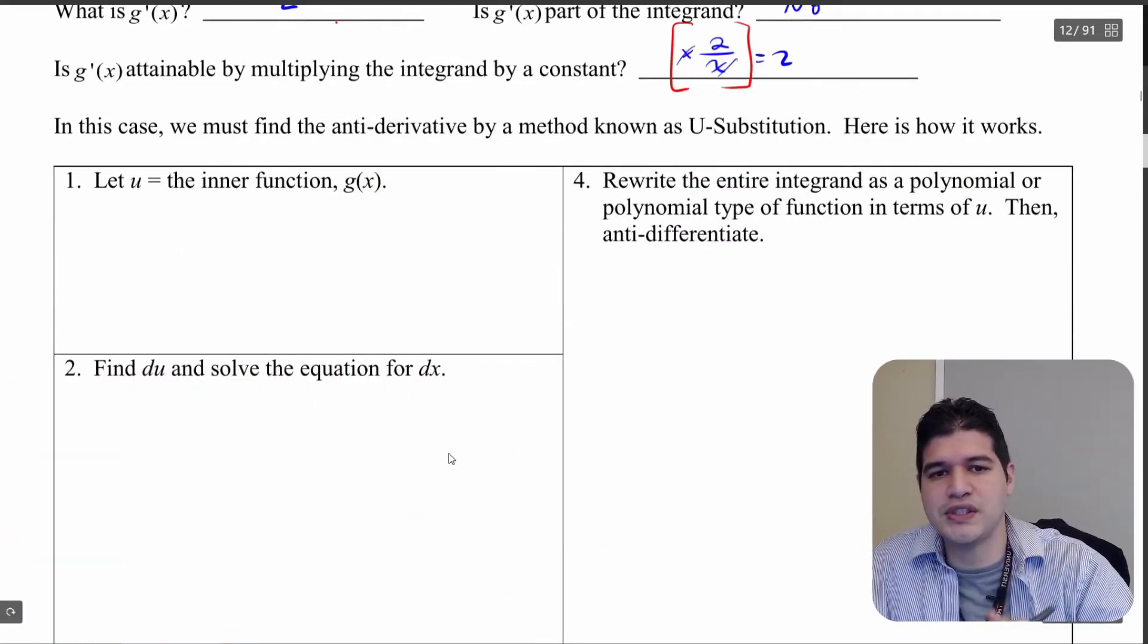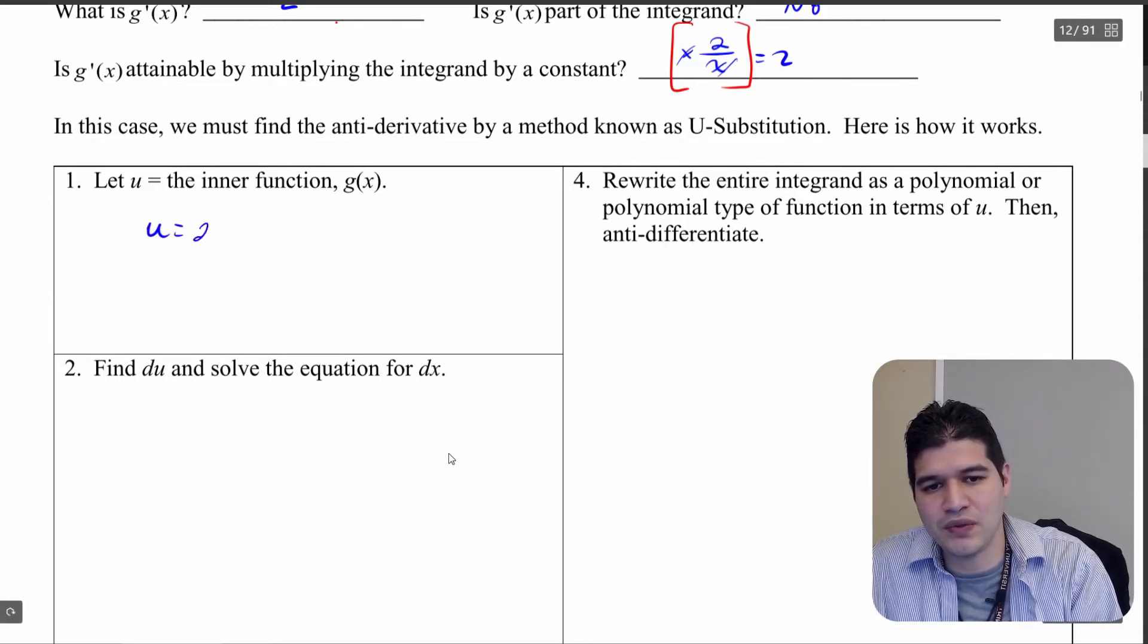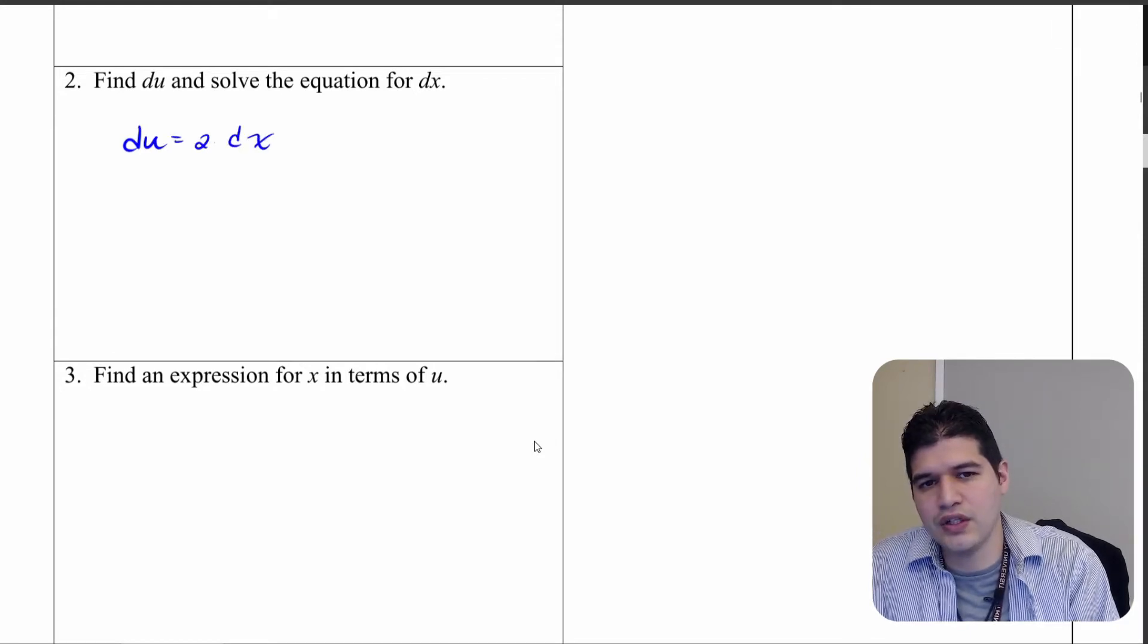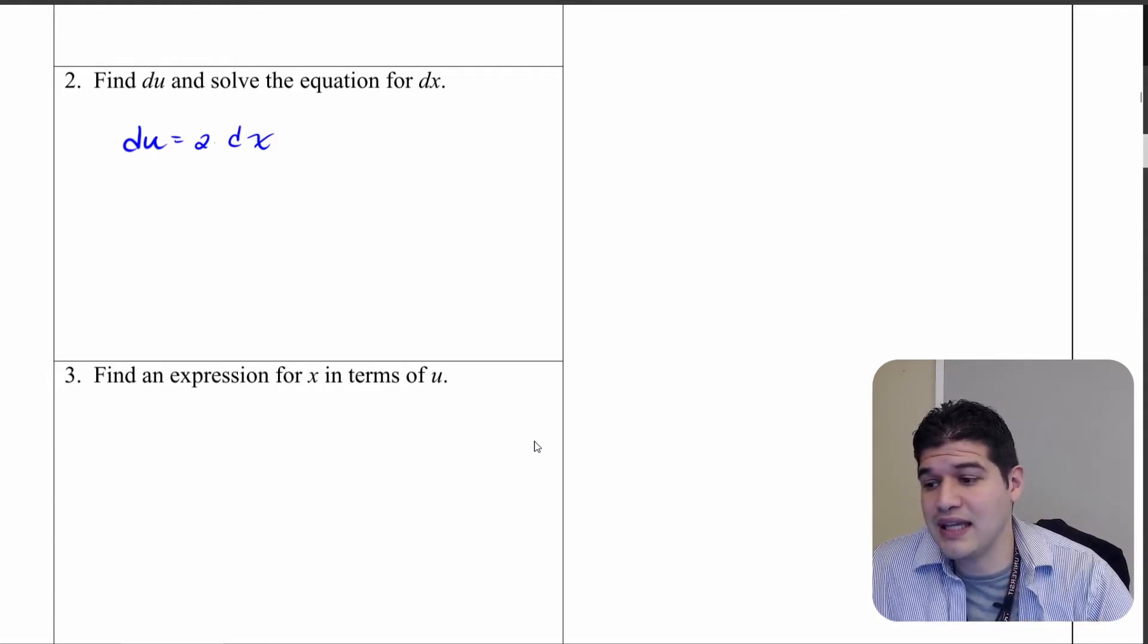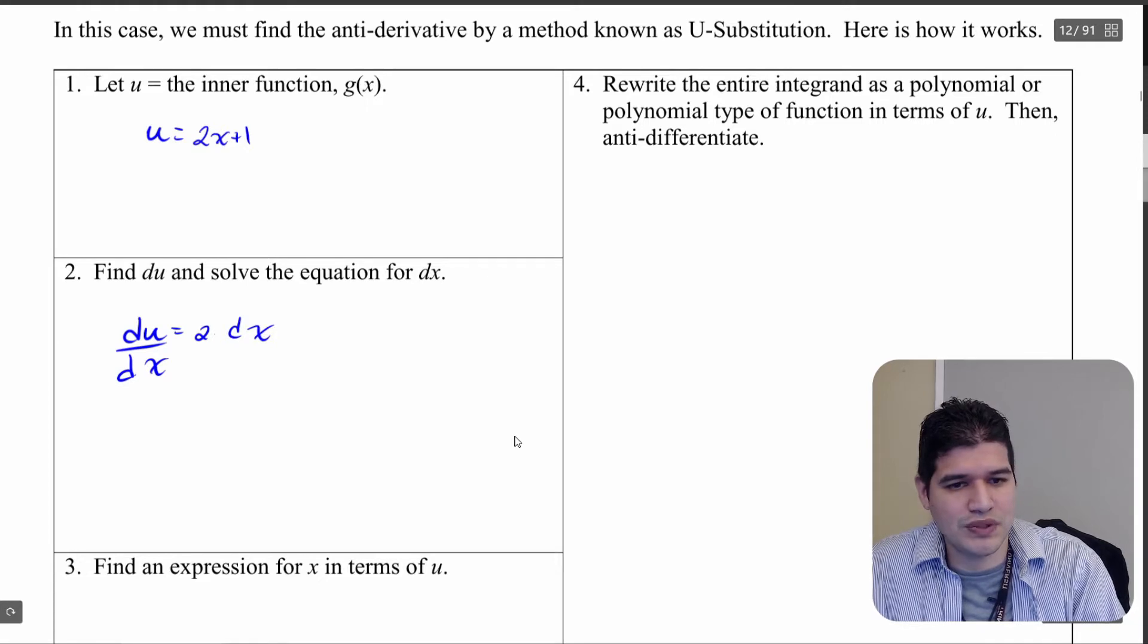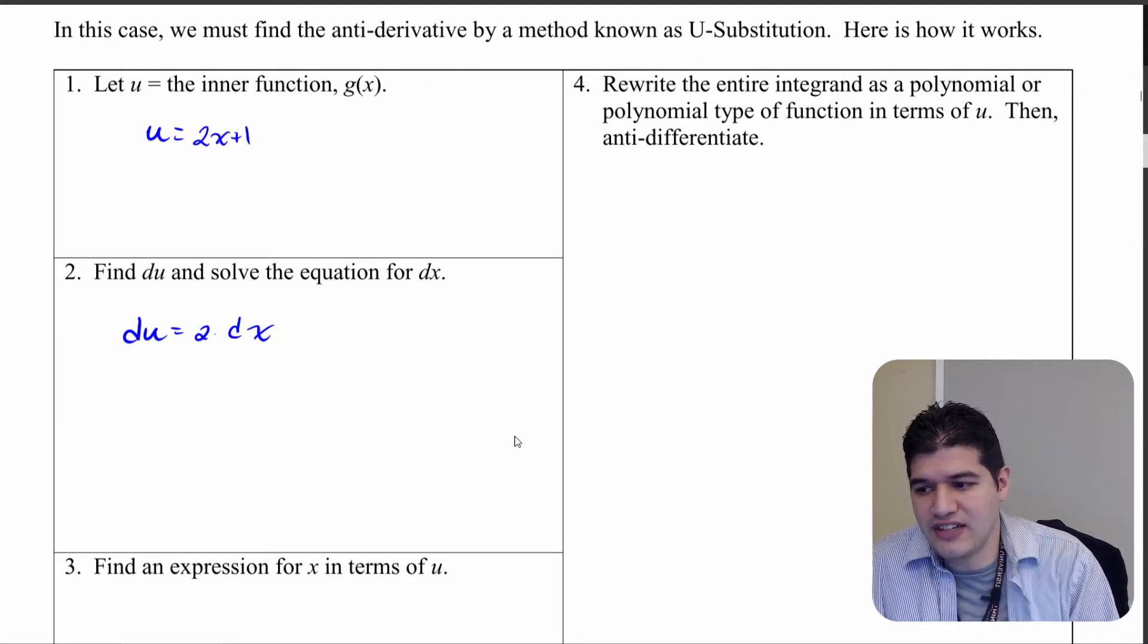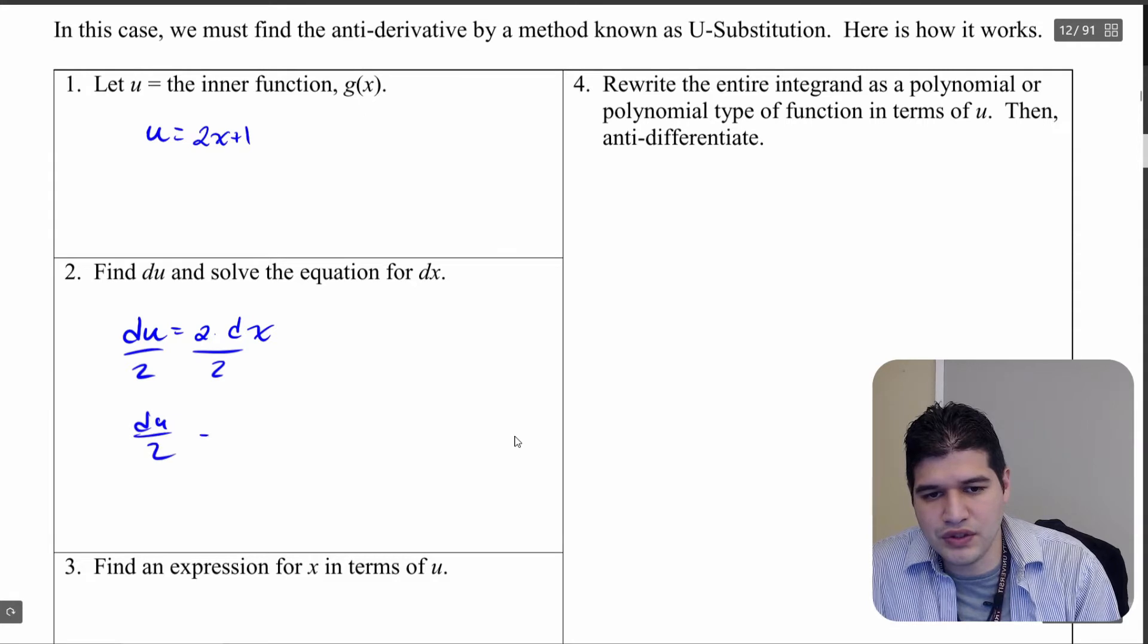So what we do when we do u substitution is, we identify what is the inner function. Well, the inner function, we're going to let that be u and that was 2x plus 1. Well, let's find the derivative of that. Well, du would be 2 dx. You know how we were normally finding dy dx or du dx? What we're doing is we're kind of splitting that up now. So notice instead of du over dx, what we're doing is we're taking that dx and we're moving it to the other side. It's not technically a fraction. These are just rates. Don't forget about that. So if I want to solve for dx here, I could figure out what dx is by dividing by 2 on both sides and I get du over 2 equals dx.